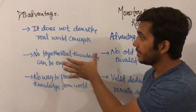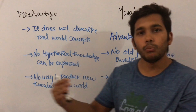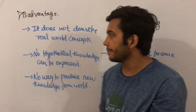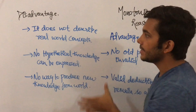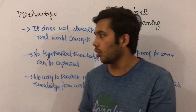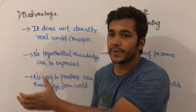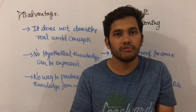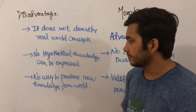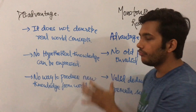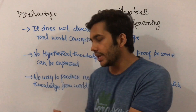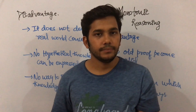The disadvantages of monotonic reasoning: it does not describe real-world concepts, since real-world concepts change with given sets of facts — for describing real-world facts we need non-monotonic reasoning. No hypothetical knowledge can be expressed; only logic-based questions can be solved and no assumptions can be made from given clauses. Finally, there is no way to produce new knowledge from the world — in monotonic reasoning we cannot derive or produce new knowledge from given sets of facts.